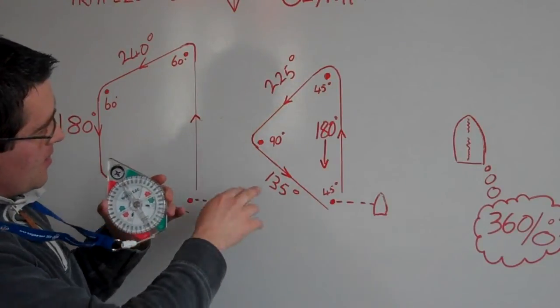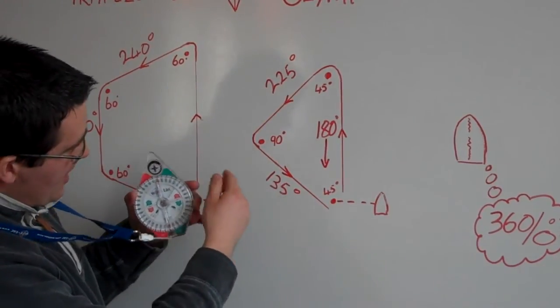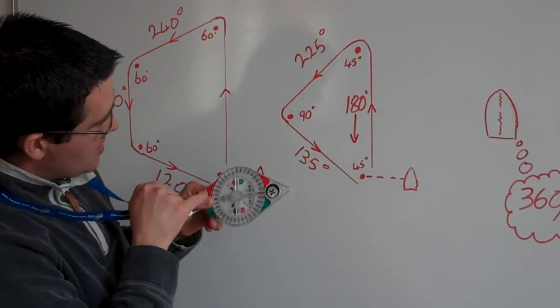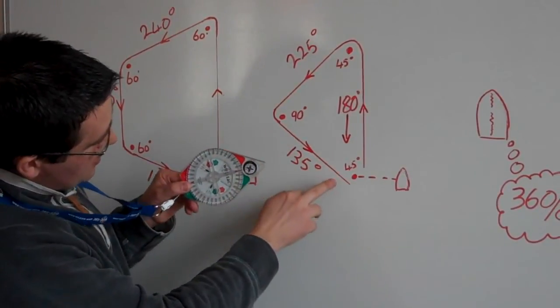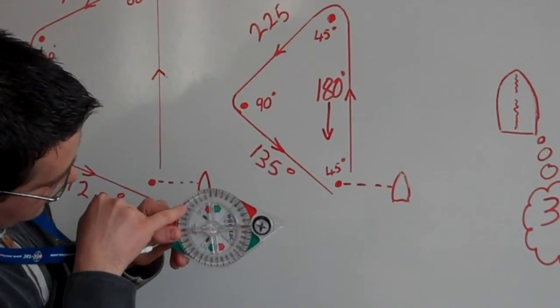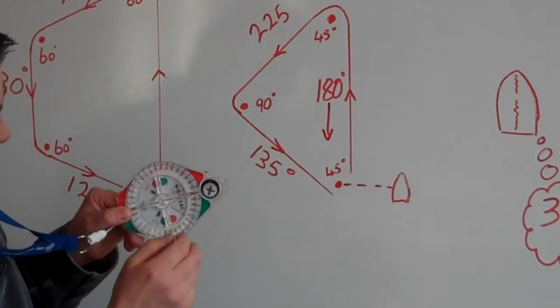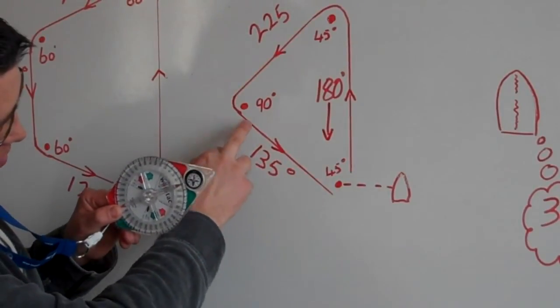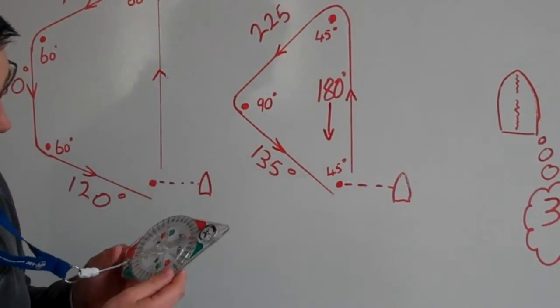Okay, once we do the jibe mark, we'll be sailing on port tack, so we move to the port section of the Watt Tack, and then 45 degrees, the line drawn on there, runs through 135 degrees on our dial. So, we know if we steer 135 degrees, we get to the leeward mark.